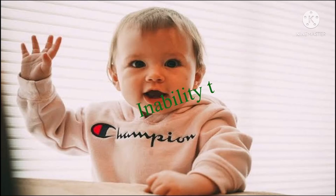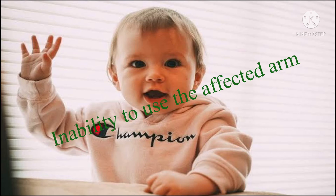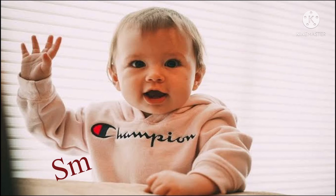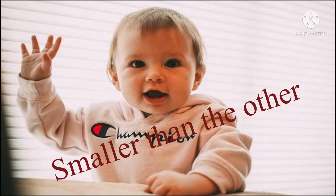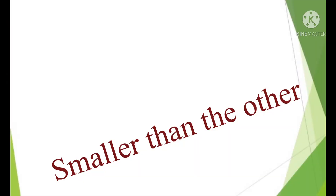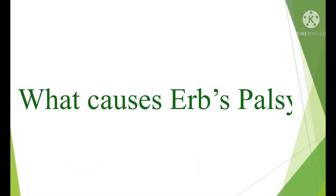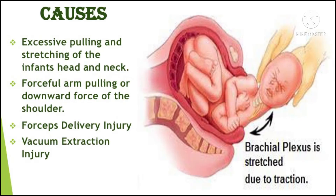There will be inability to use the affected arm, and it sometimes appears smaller than the other. The most common causes of Erb's palsy include excessive pulling and stretching of the infant's head and neck during difficult or prolonged delivery.